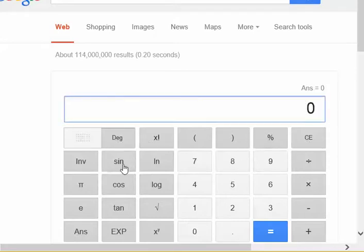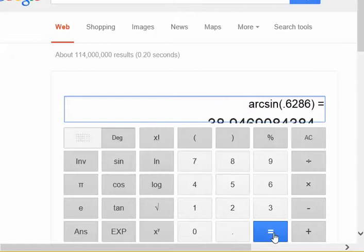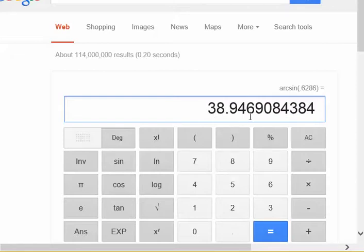In fact, if I clear that out, if I were to do the same thing for inverse cosine, you'll see it'll say arc cosine. So don't let that trick you. It's the same thing. Inverse sine of 0.6286 equals 38.95 degrees.